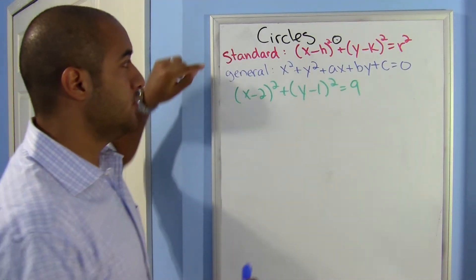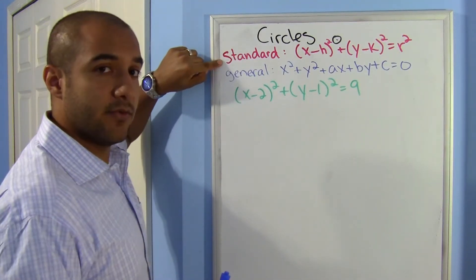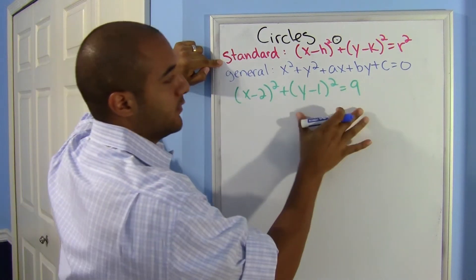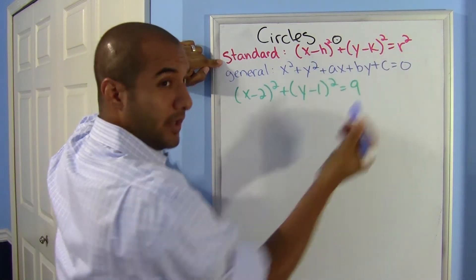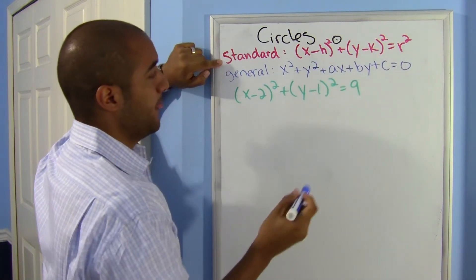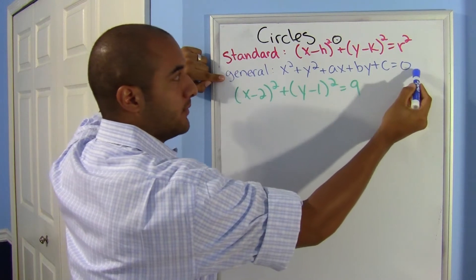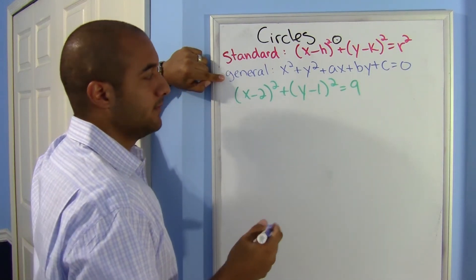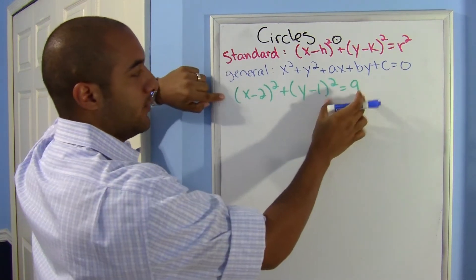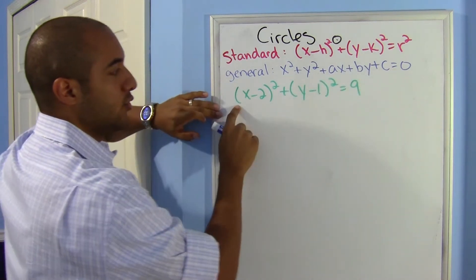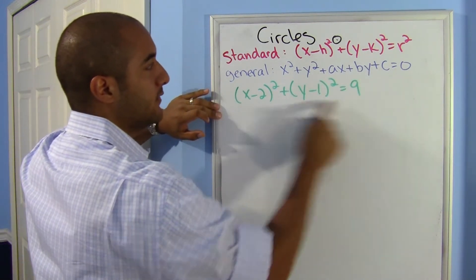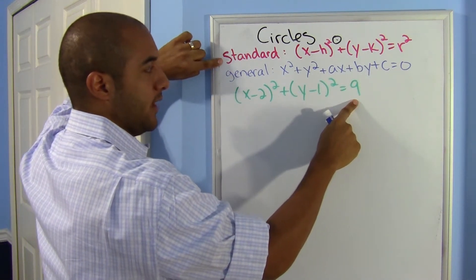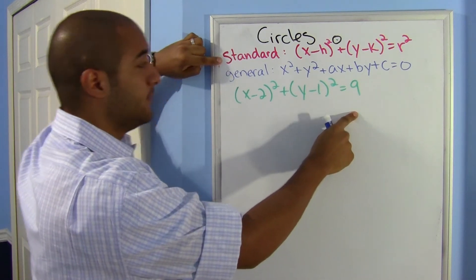We've been using the standard form of the equation for a circle — very helpful, right? This is the general form of the circle. When they want you to write it like this, you always start off in standard form anyway, and all you have to do is just work it out.